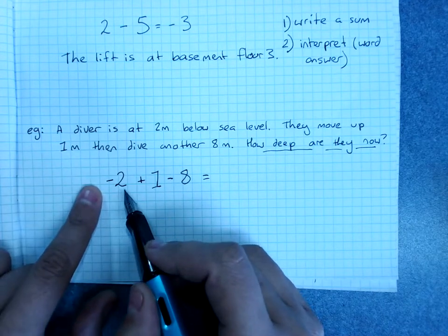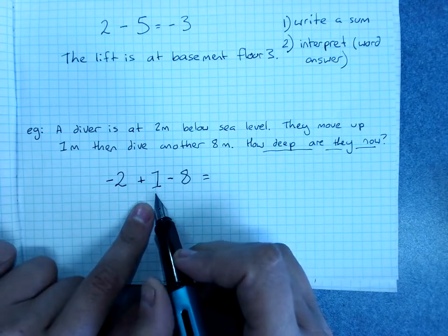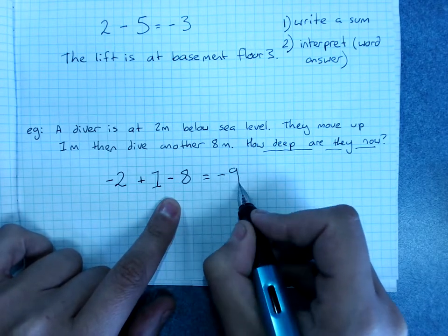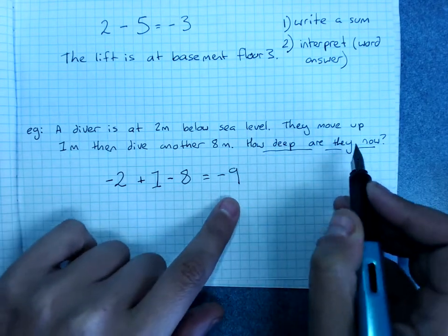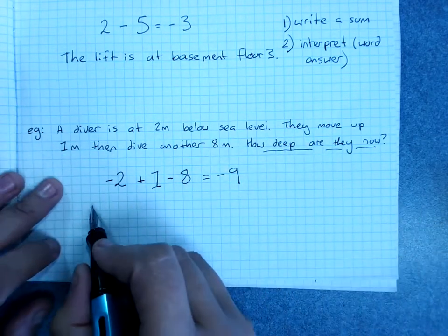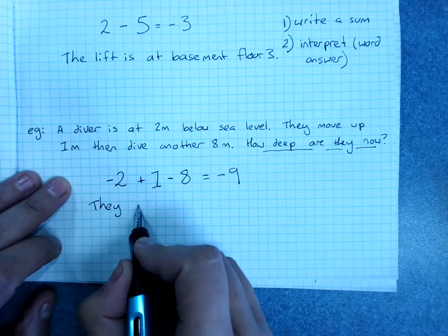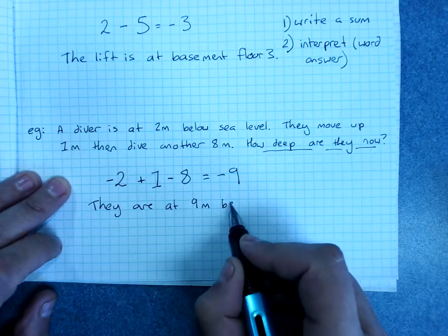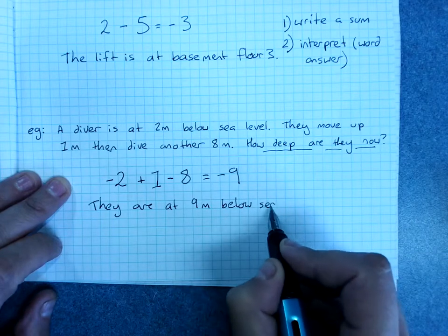Start at negative two. Add one. We're at negative one. Take away eight. Negative nine. And we interpret it with a word answer. What does negative nine mean when we're talking about sea level? They are at nine meters below sea level.